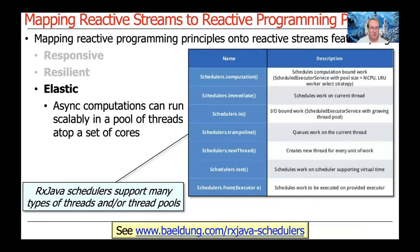There's also the concept of elasticity, which means asynchronous computations can run scalably in a pool or pools of threads multiplexed atop one or more cores — usually many cores with modern multi-core processors. The RxJava framework has a scheduler that supports a whole slew of different kinds of threads and thread pools, including a computation thread pool, an IO thread pool, and so on.